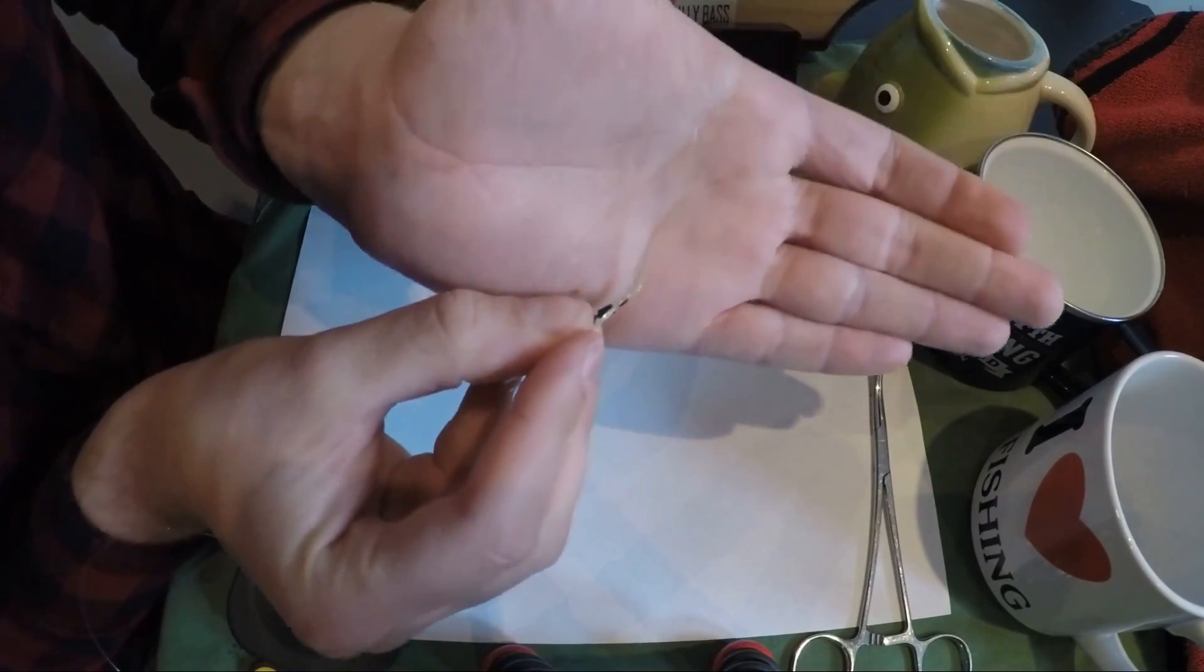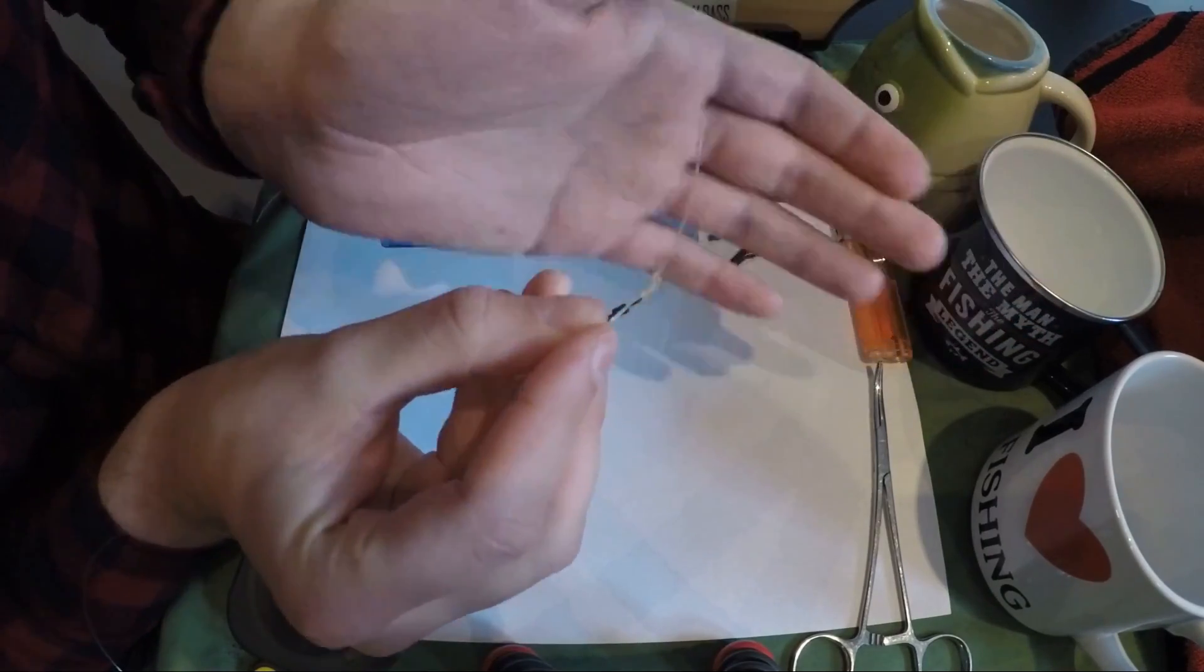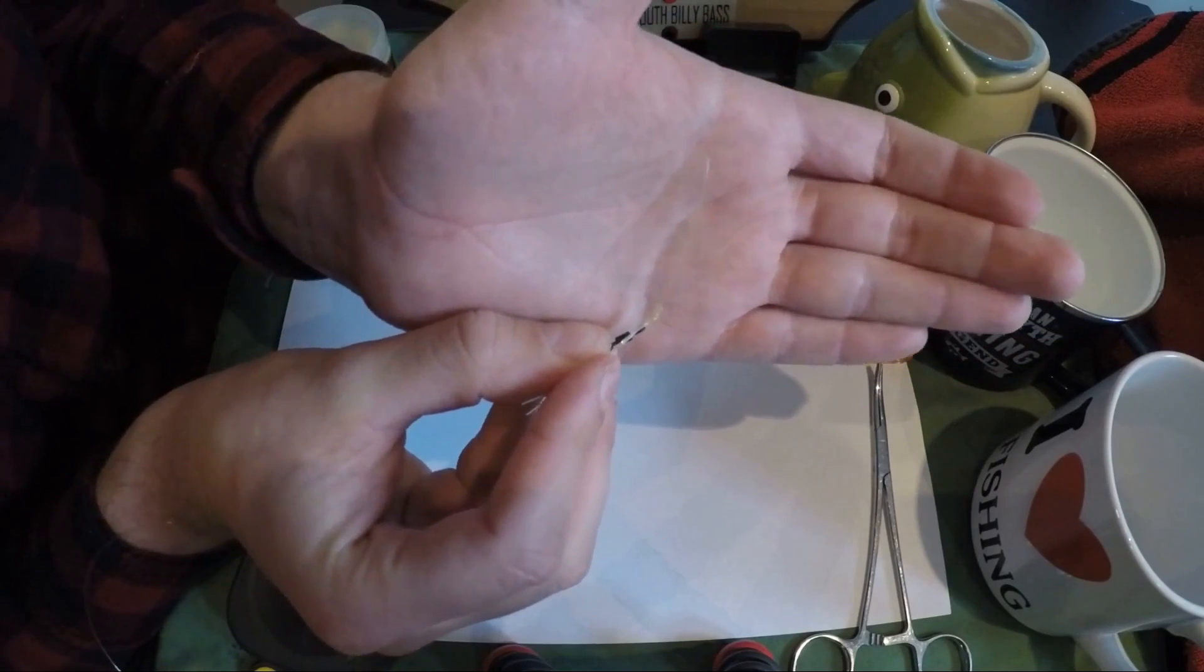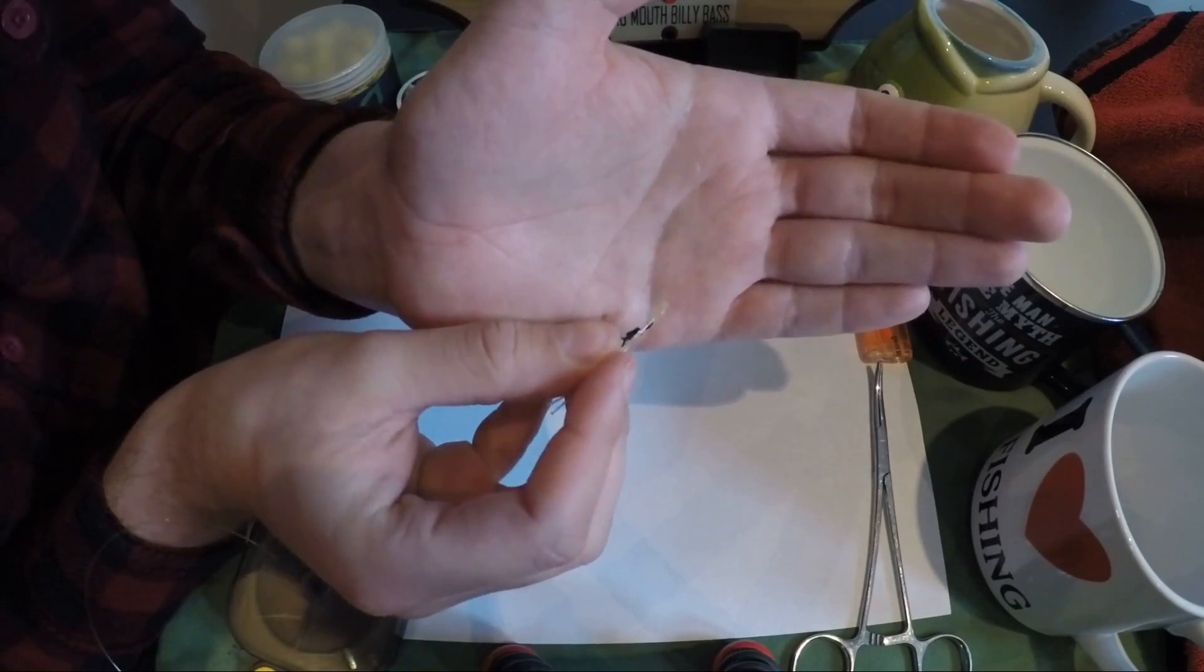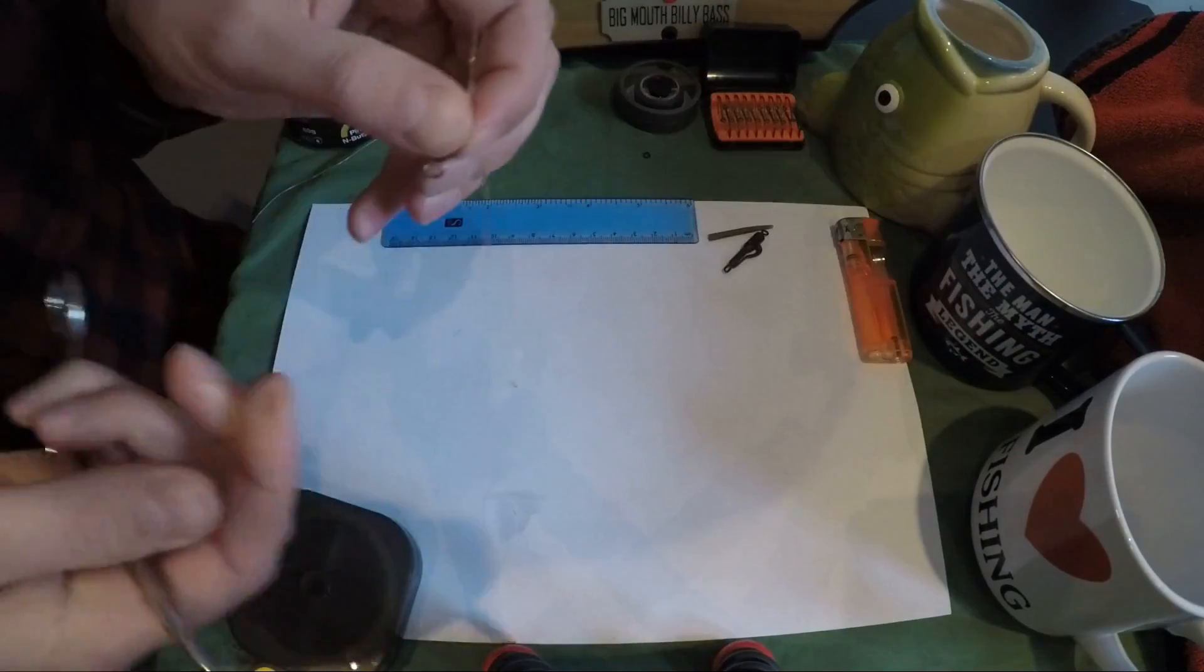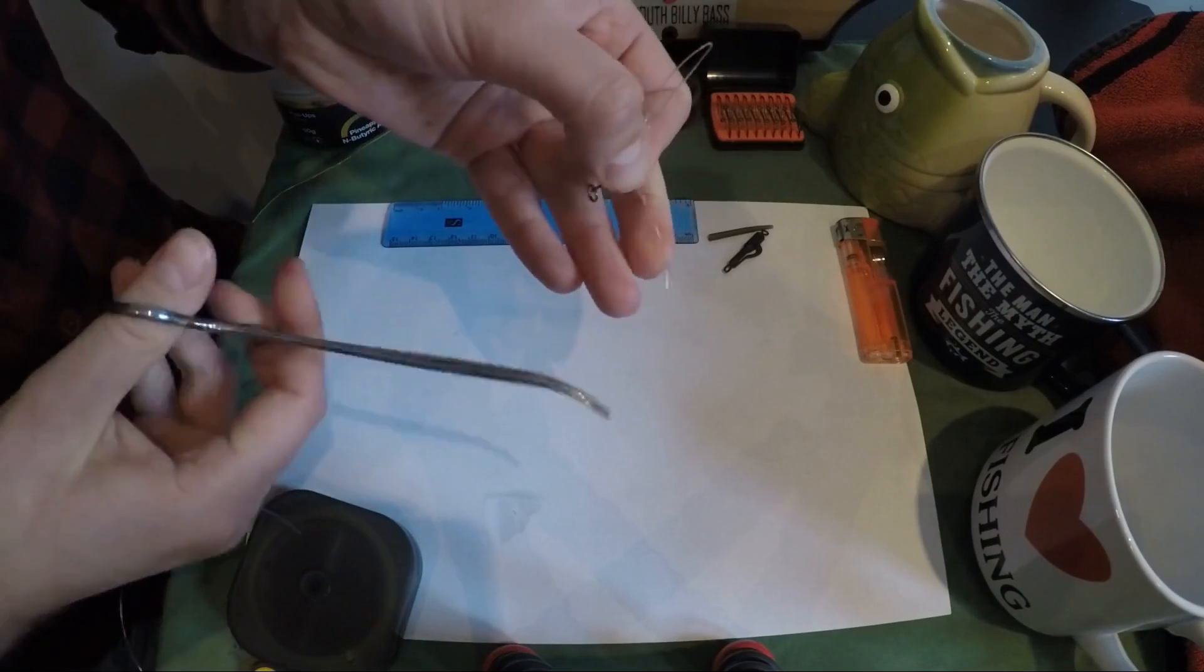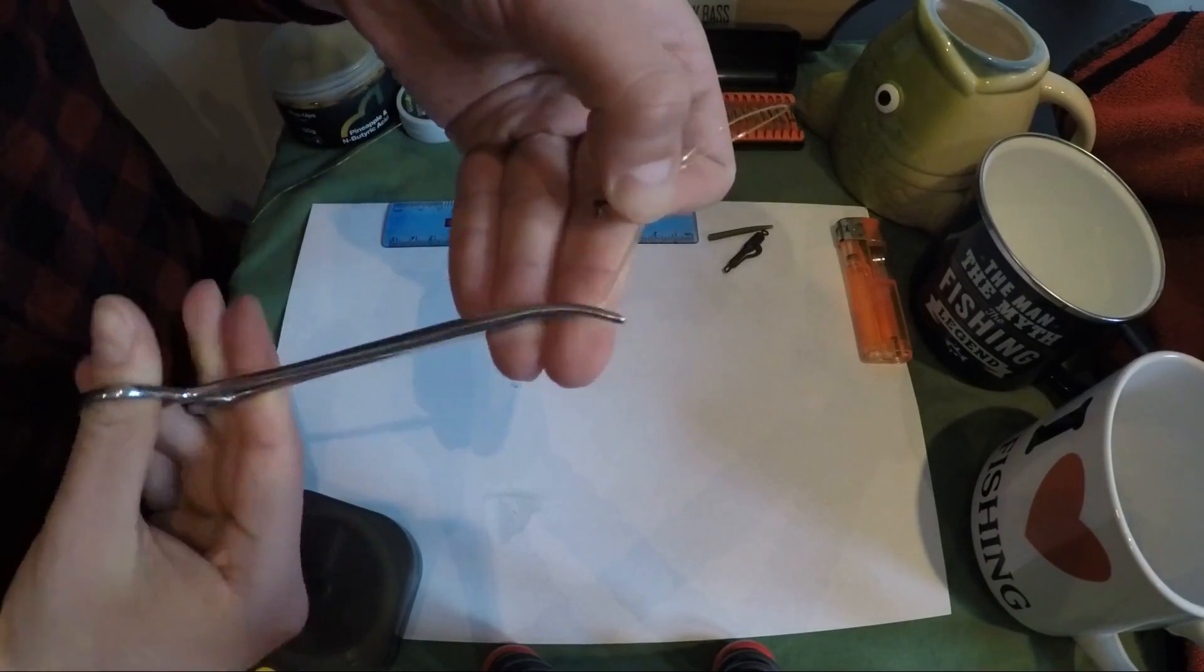We've just got to bed it down now, which is a little bit tricky with this rig, so I'll show you a little trick to do that. What I'm going to do is take my forceps, pinch the two tag ends, and wrap them around the forceps so that gives me something to pull with.